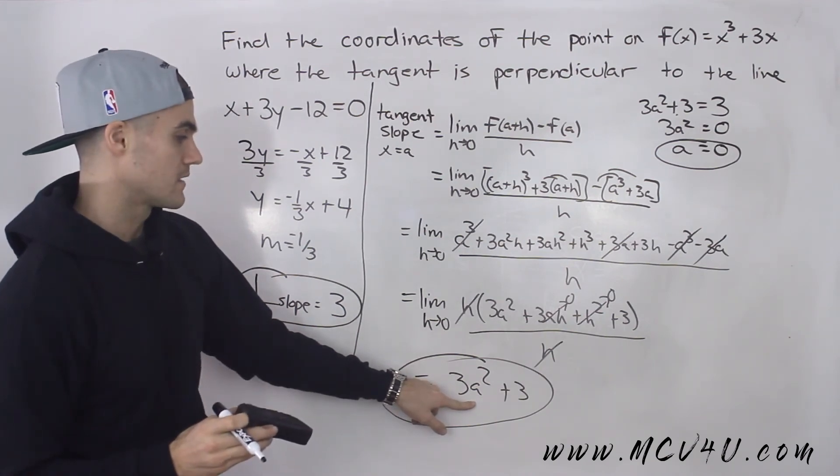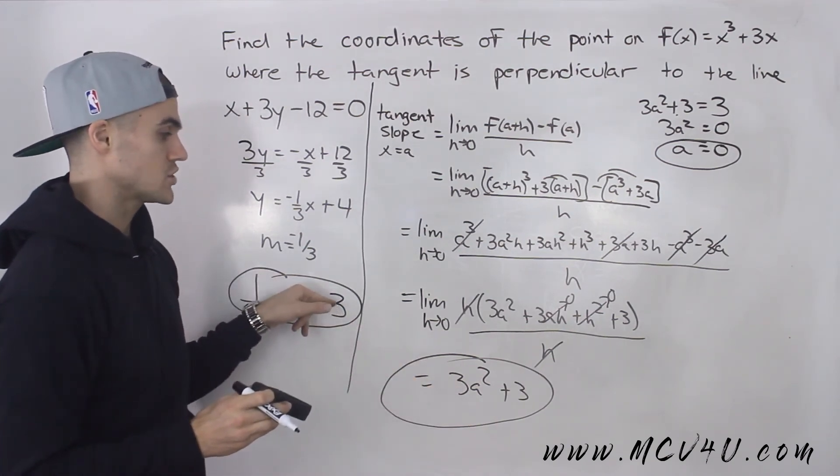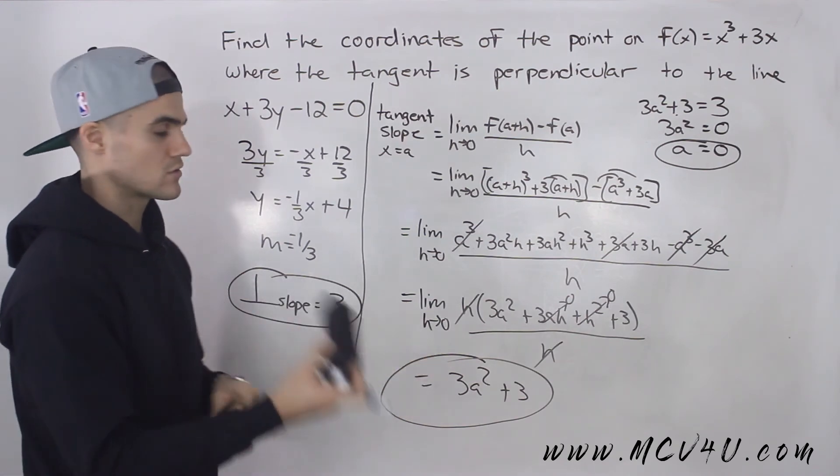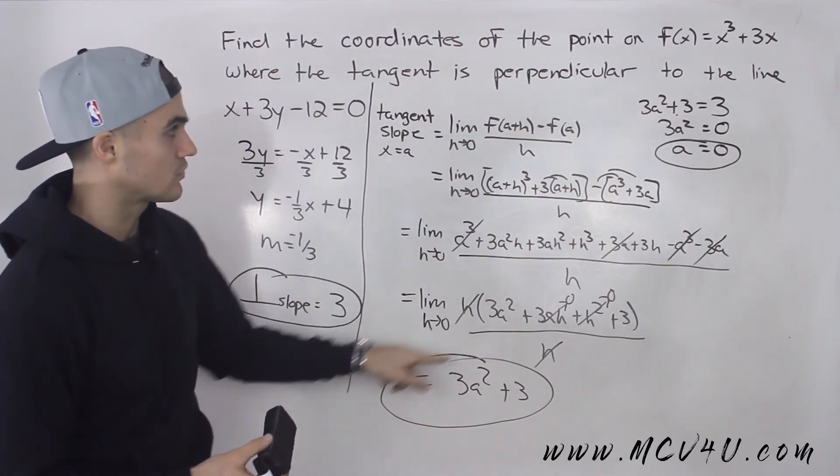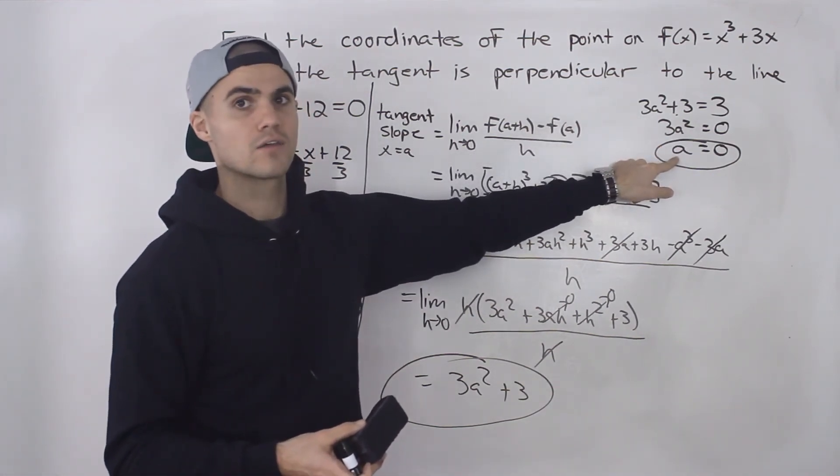Well, in this case, they give you the slope of the tangent, and they're asking at what point is that happening. So it's sort of backwards. So now we just make that expression equal to 3 like we did up here and solve for that a value.